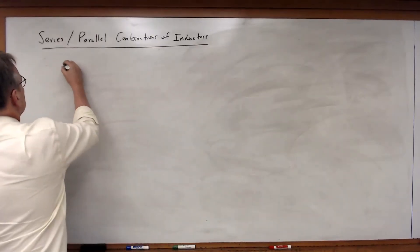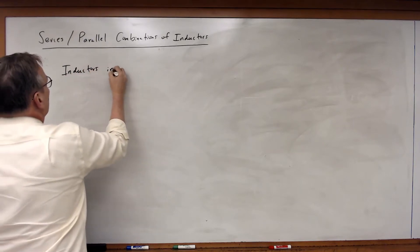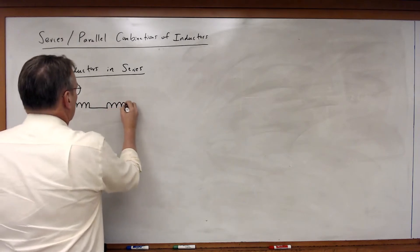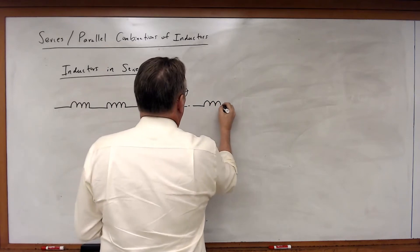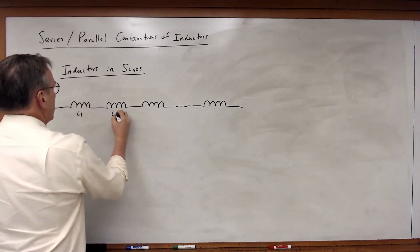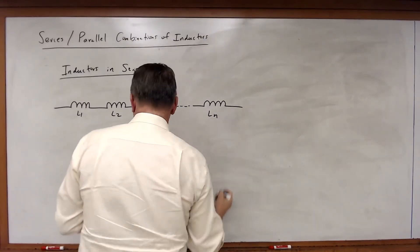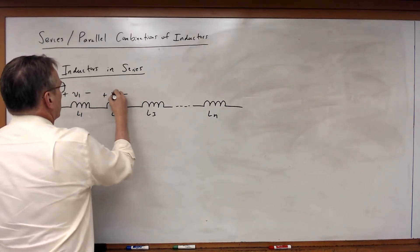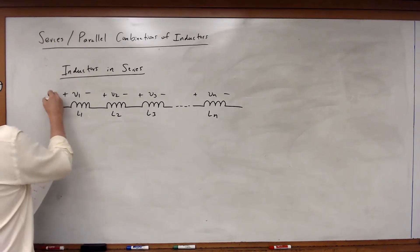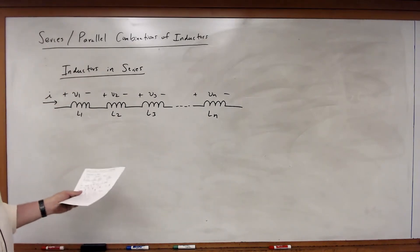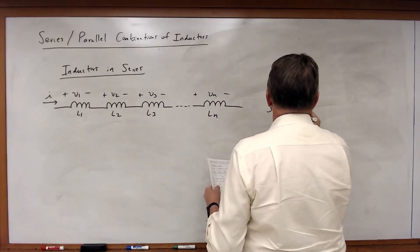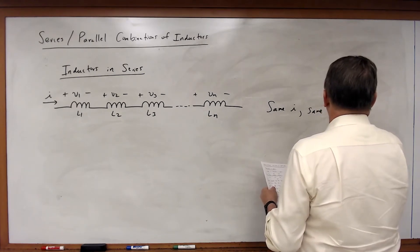Let's look at the math. Let's first consider inductors in series. How do they combine? Just as we did before, we're going to assume we have N inductors in series: L1, L2, L3, all the way to L sub N. Each inductor will have its own voltage across it, but they're all going to have the same current because they are all connected in series. So every inductor has the same I and the same di/dt.